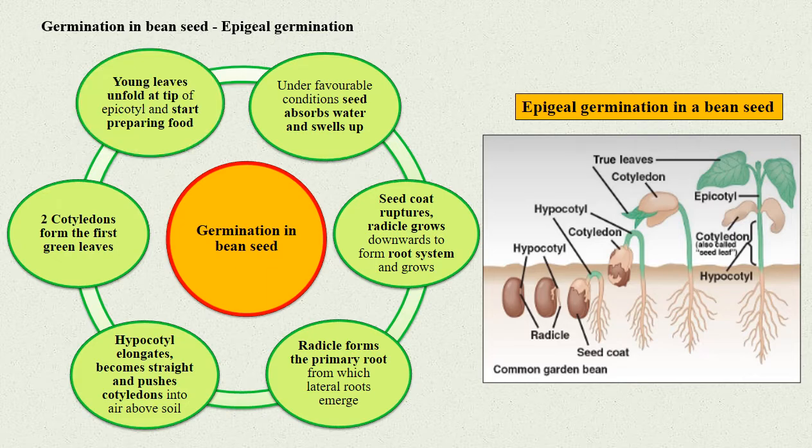The young leaves unfold at the tip of the epicotyl and start preparing food for the plant through photosynthesis. In this germination, the hypocotyl elongates and the germination is epigeal germination.